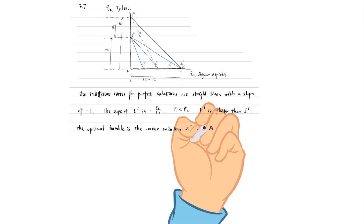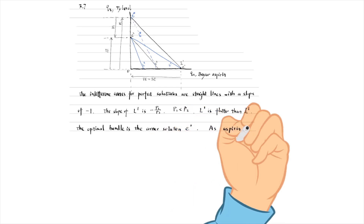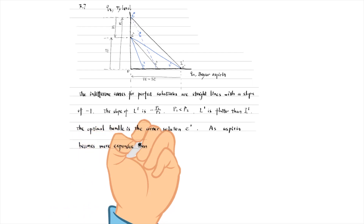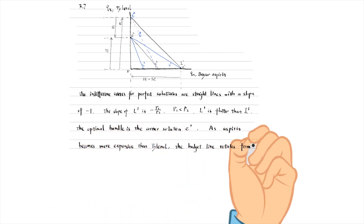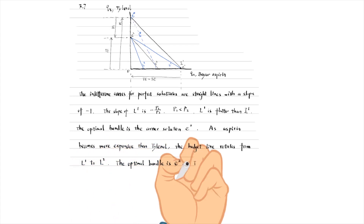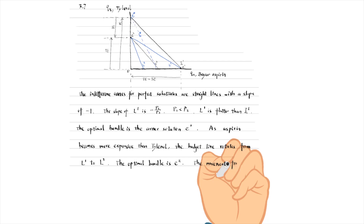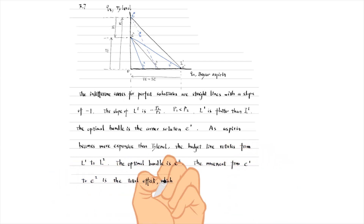As the price increase makes aspirin more expensive than Tylenol, the budget line rotates inward from L1 to L2. The optimal bundle is E2, where the consumer only buys Q2, Tylenol. The movement from E1 to E2 is the total effect of the price increase in P1.